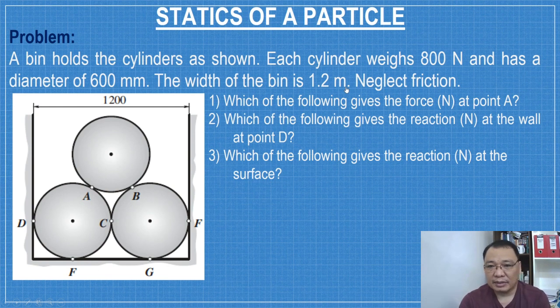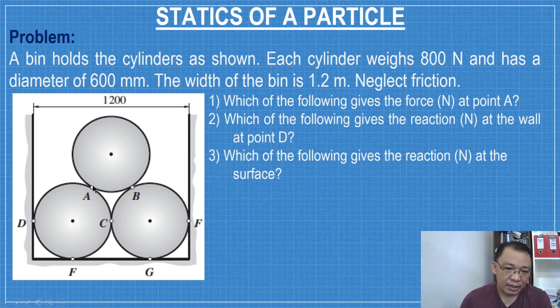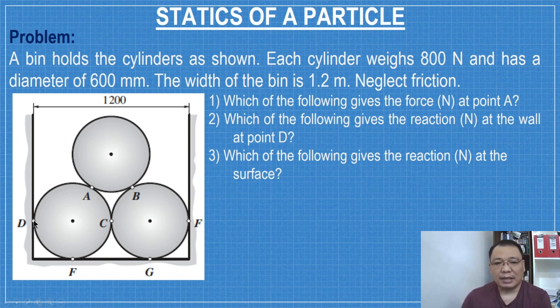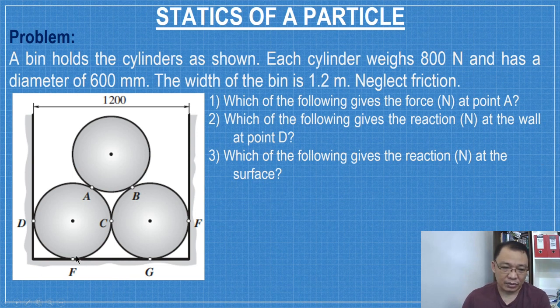Neglecting friction. First question, which of the following gives the force at point A? The point of contact A. Number two, which of the following gives the reaction in newtons at the wall at D? And then number three, which of the following gives the reaction in newtons at the surface? This is either F or G because by symmetry, the force at D is equal to the force at E.